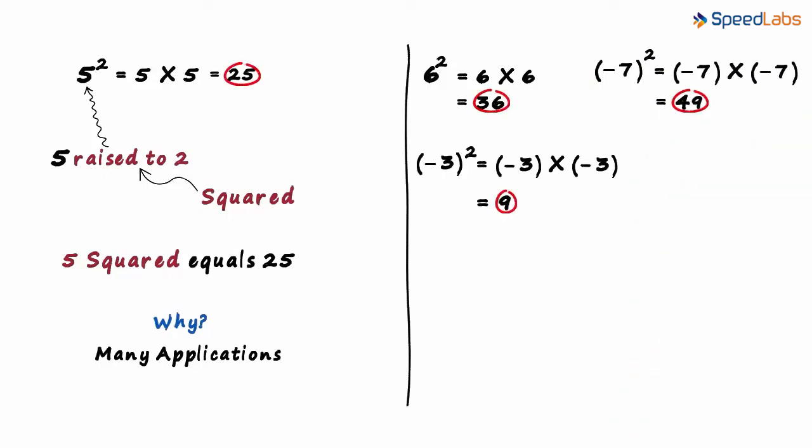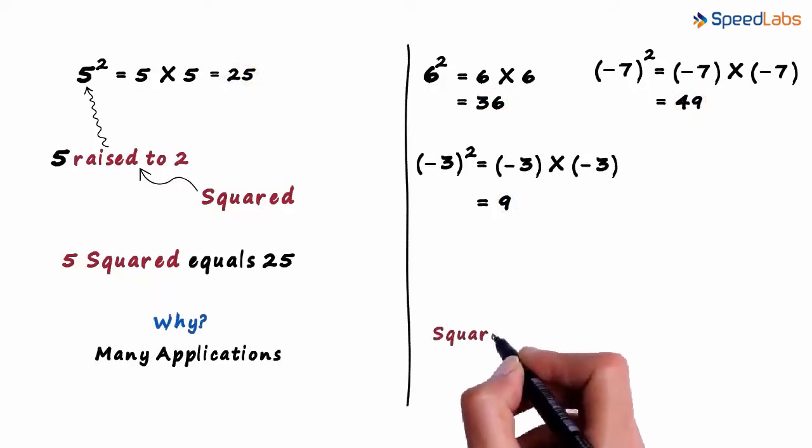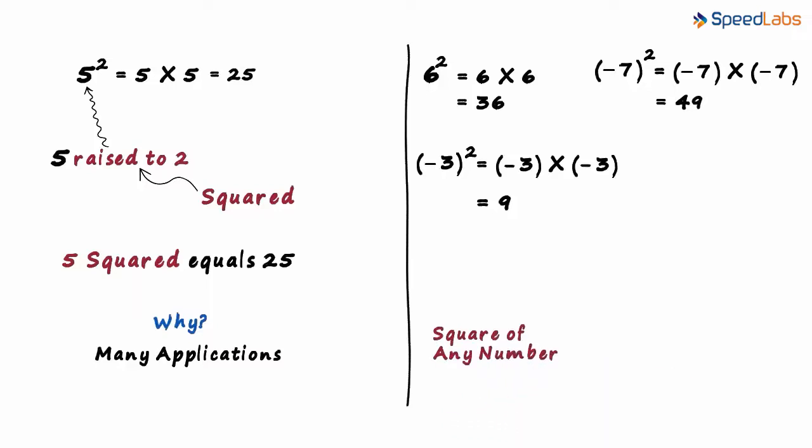Look at all the answers on the board. They are all positive. What does that tell us? It tells us that the square of any number is always positive.